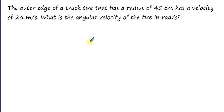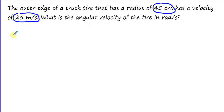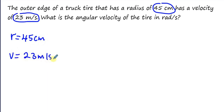The first problem: the outer edge of a truck tire that has a radius of 45 centimeters has a velocity of 23 meters per second — this is a linear velocity v. The given values are: r equals 45 centimeters, v equals 23 meters per second. We need to find the angular velocity omega in rad per second. First, we need to convert the radius from centimeters to meters.